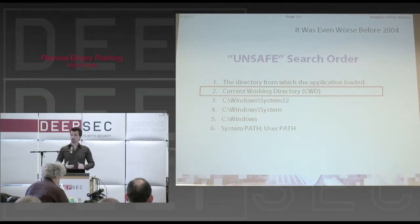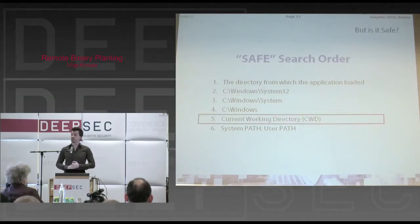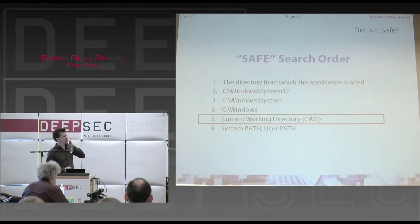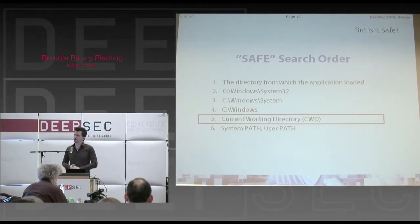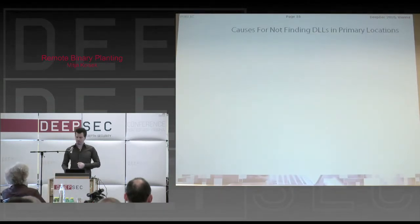If it's any consolation, before 2004 it was even worse, because the search order had the current working directory in location number two. Microsoft decided to change that to what they call the safe search order — it's a safer search order. But is it safe? If an application trying to load a library with a relative path doesn't find the DLL in those first four locations, isn't it trying to load a DLL that doesn't even exist? And why would an application want to do that? There are actually many reasons why applications try to load DLLs that aren't there on the system.